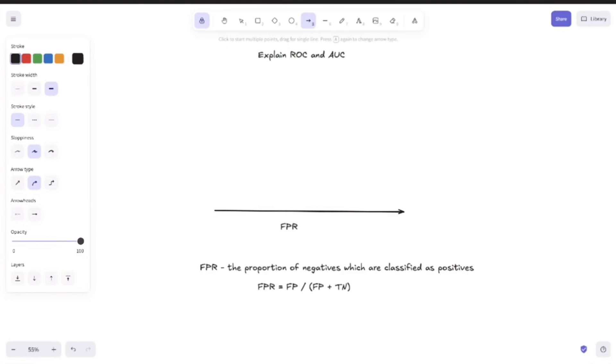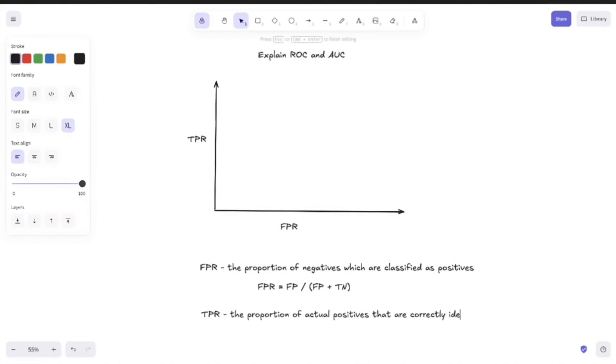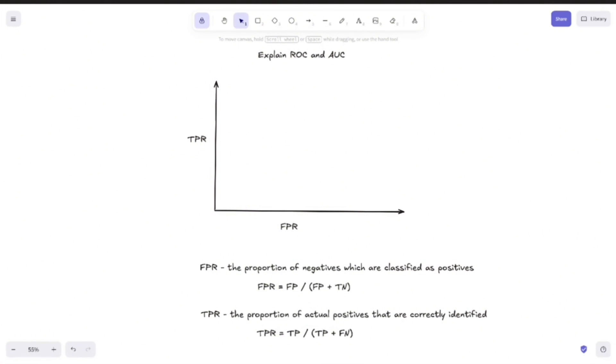And the other thing that we are measuring here is the true positive rate. So the TPR which measures the proportion of actual positives that are correctly identified. And the formula for that is TPR equals TP divided by TP plus FN. So the number of true positives divided by the number of true positives plus the number of false negatives.